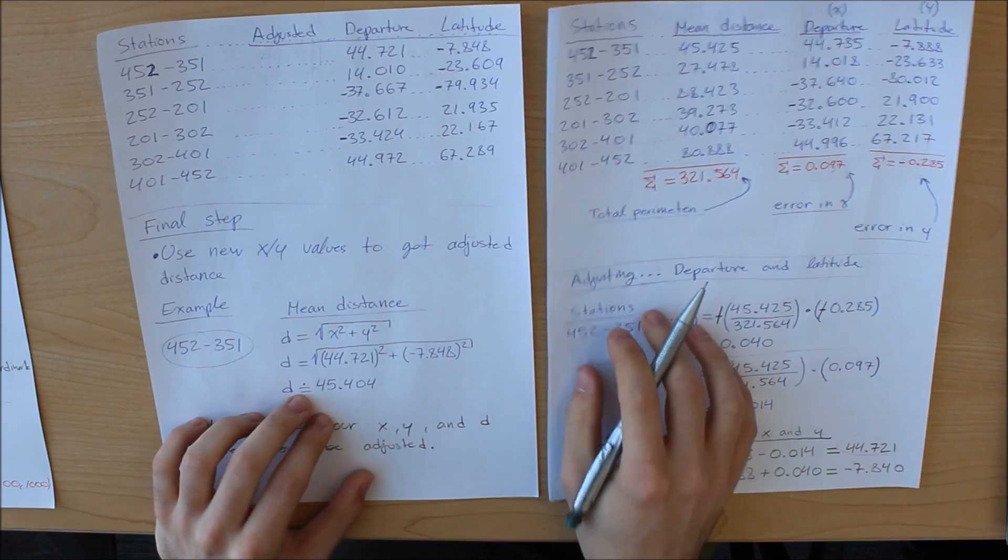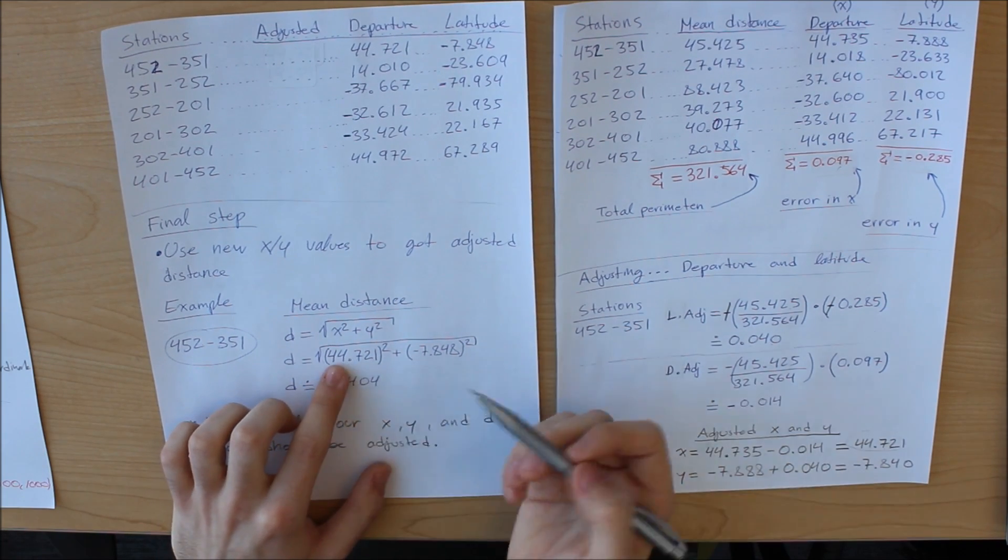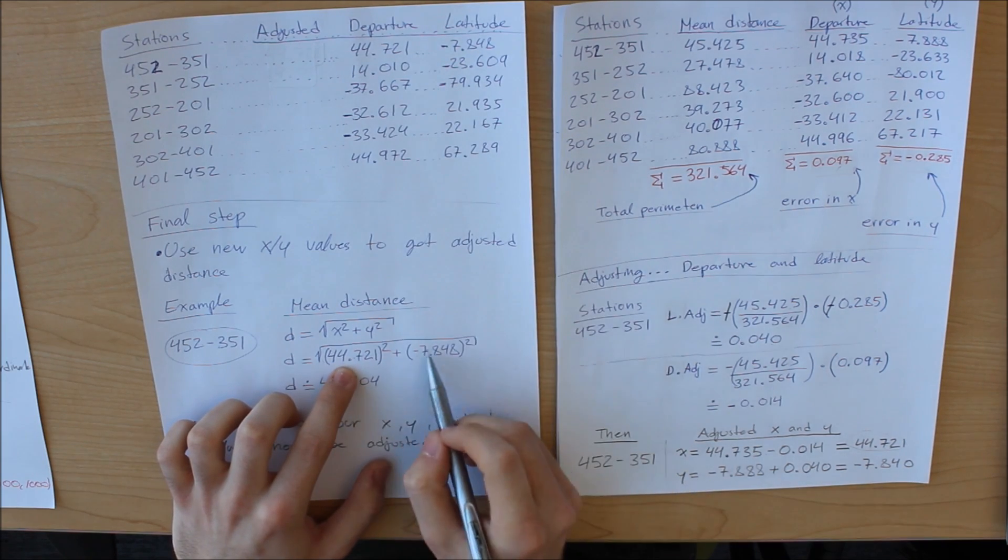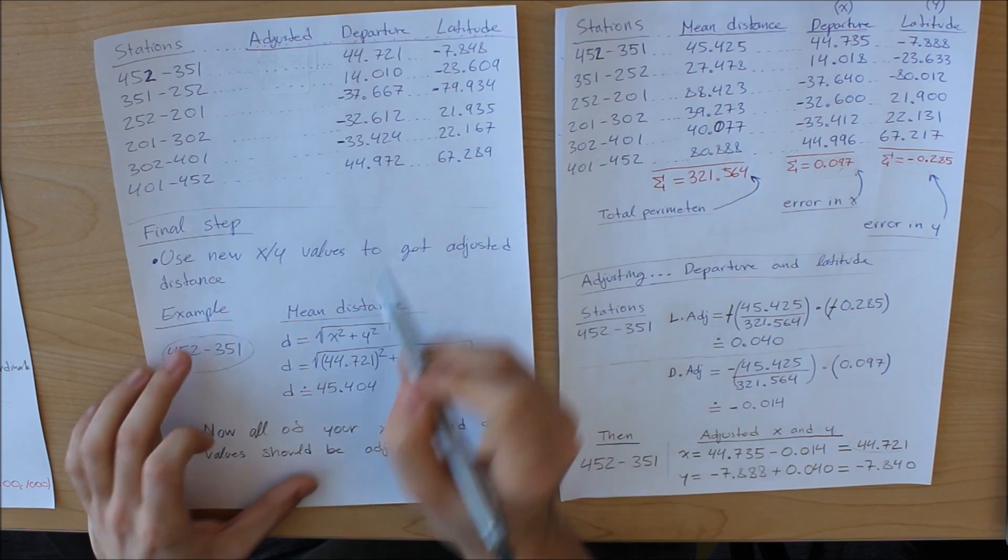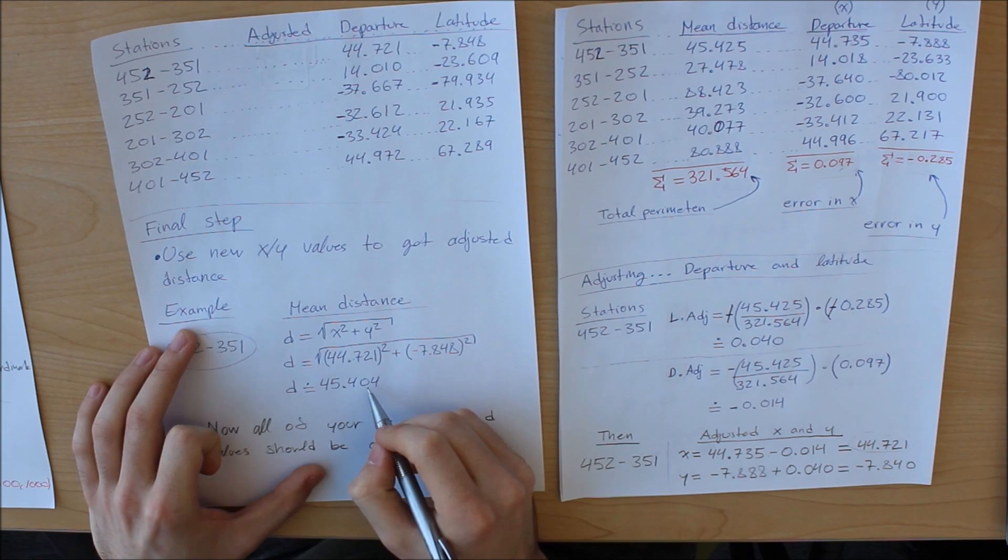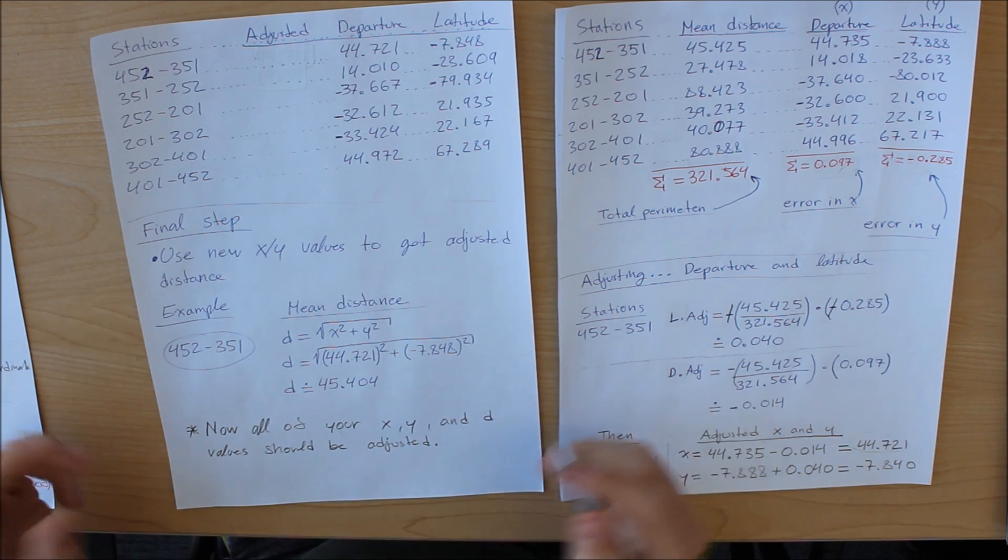And that is a formula we are going to use. So we just plug in our values for x. Our adjusted x is right here. Our adjusted y is right here. And this is the value that we are given approximately. Now again, careful with rounding. So this is now our adjusted distance.